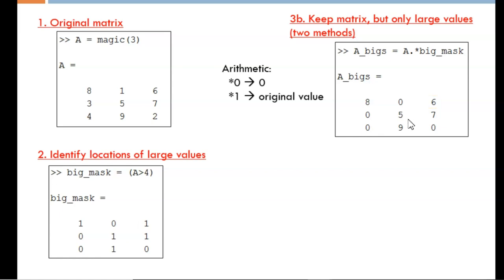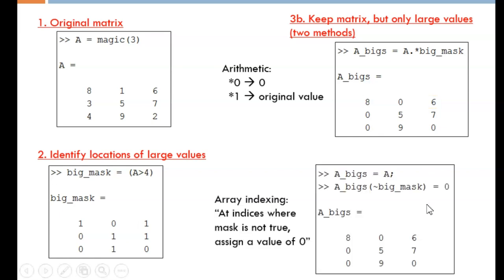We can also accomplish this through array indexing. First, I copy the original matrix into the output matrix. Then, I directly assign all the small values to now be zero. How should we interpret this command? First, go into matrix A_bigs. Then, where we see a false in the mask, changes will occur. Why at false? Because of the tilde,